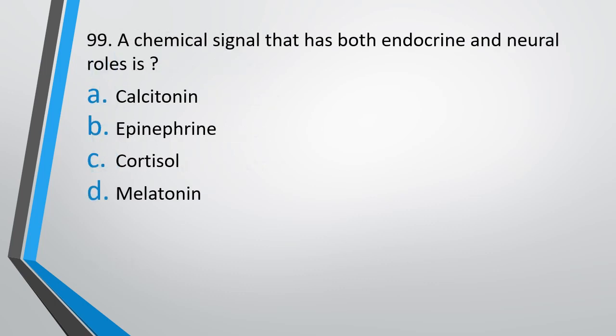Question number 99. The chemical signal that has both endocrine and neural role is: Calcitonin, Epinephrine, Cortisol or Melatonin. The correct answer is option B — Epinephrine. Epinephrine (adrenaline) is an emergency hormone and also acts as a neurotransmitter in the sympathetic system of our body.